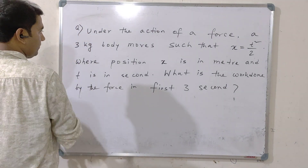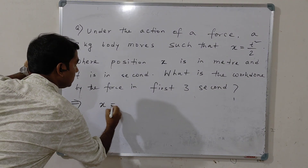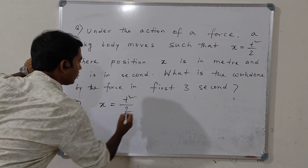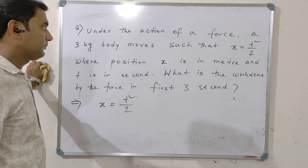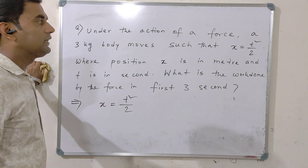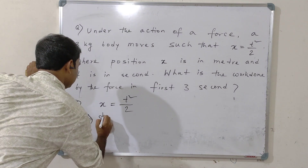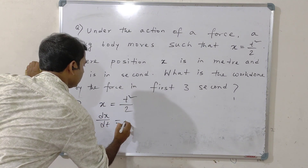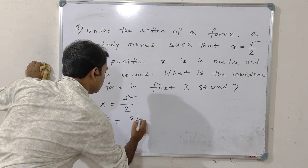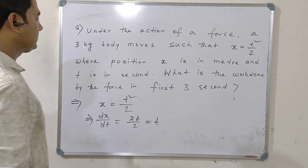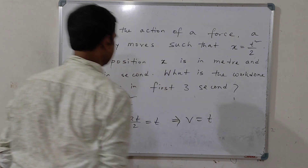So, let us write down the given equation: x equal to t squared by 2. We know the first order derivative of position will give the velocity. That is, dx/dt will give 2t by 2, which is t. So, velocity v is equal to t.